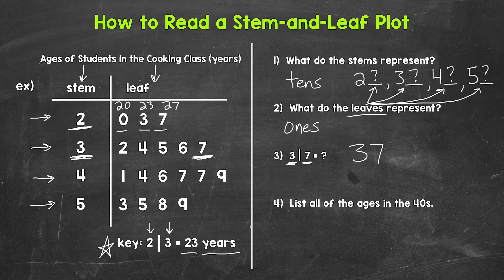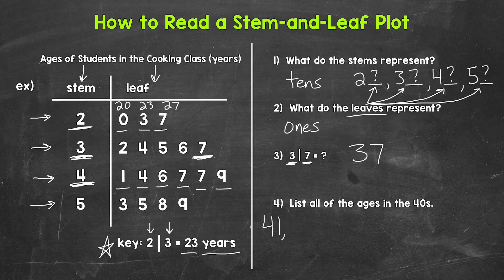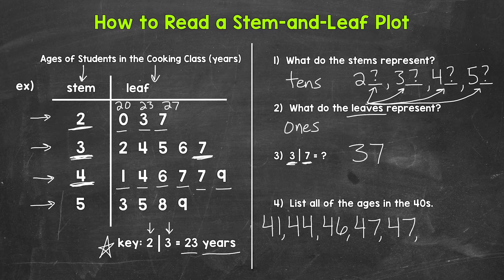Lastly, let's move on to number four, where we need to list all of the ages in the forties. Let's take a look at the stem of four and then these leaves. Putting that stem together with all of those leaves, we have 41, 44, 46, 47, another 47, and then 49. So those are all of the ages in the forties. That's our two-digit example.